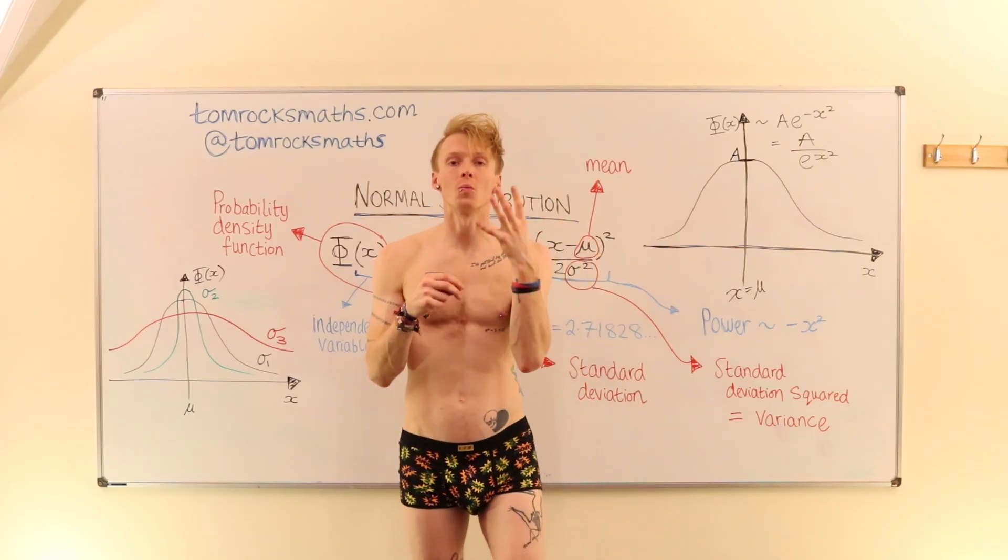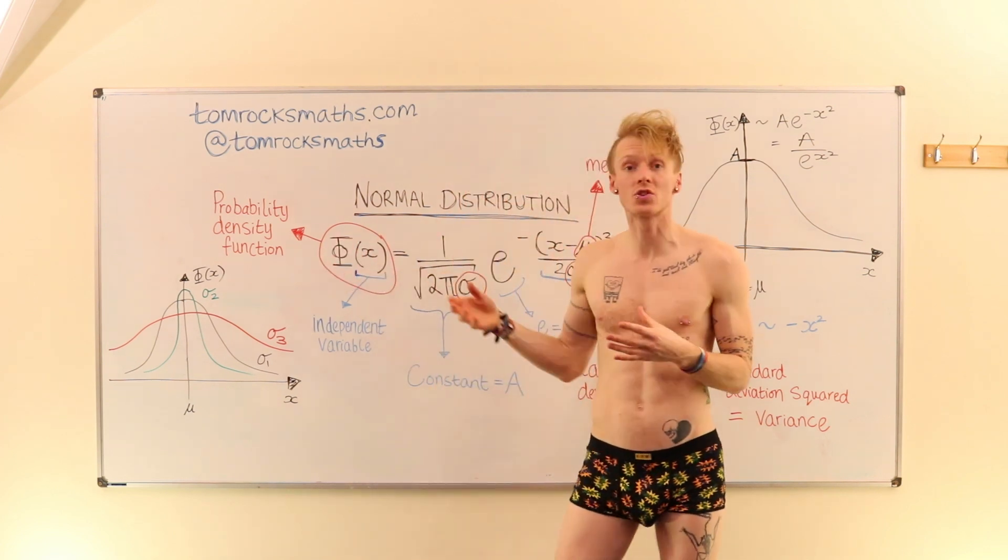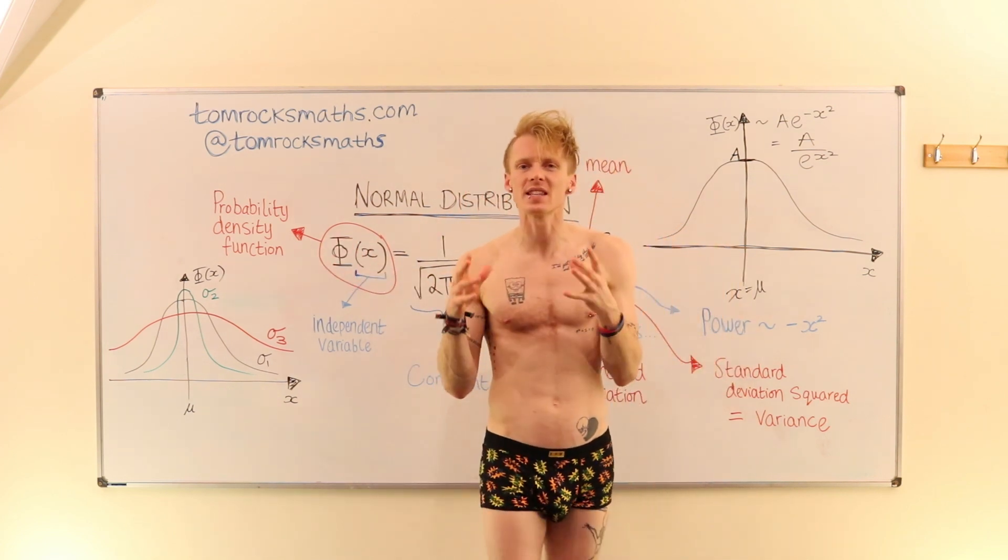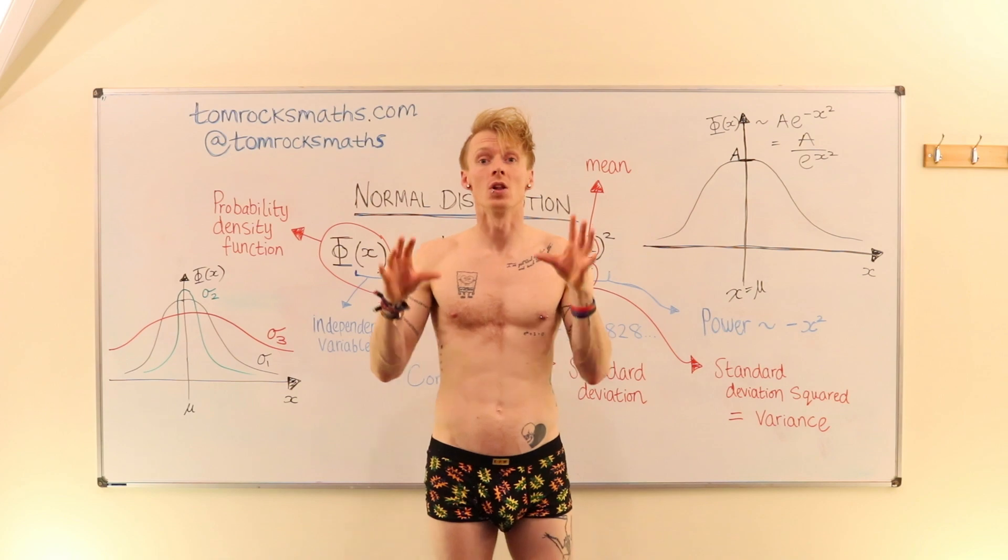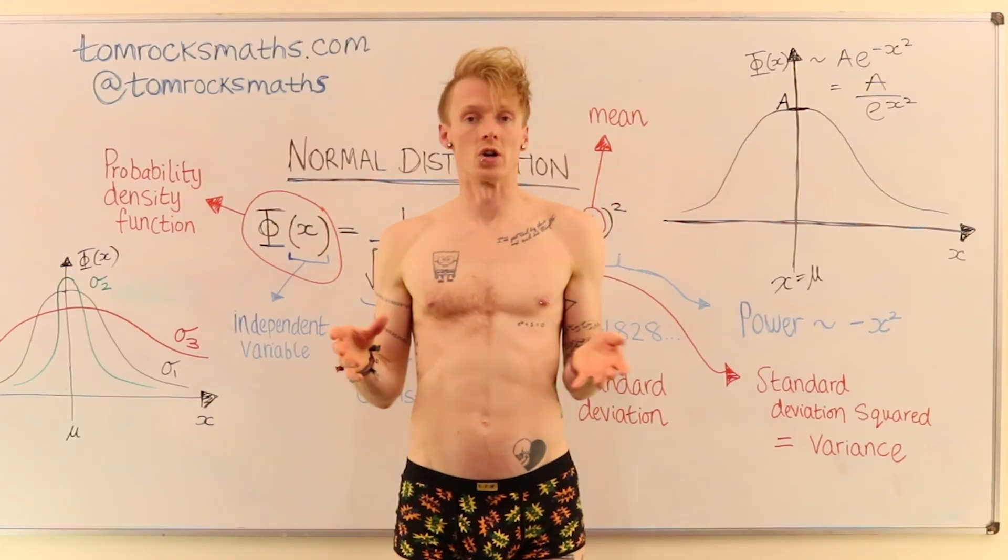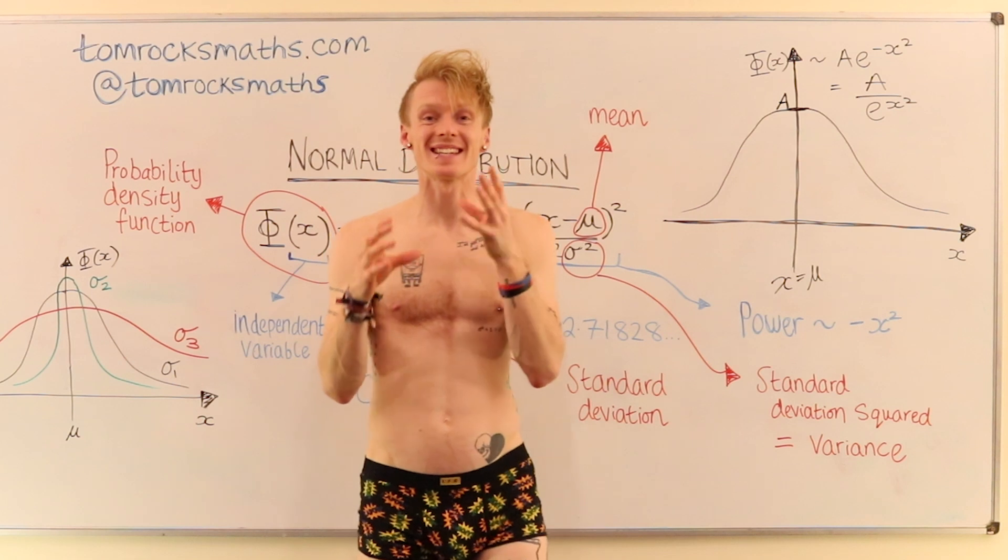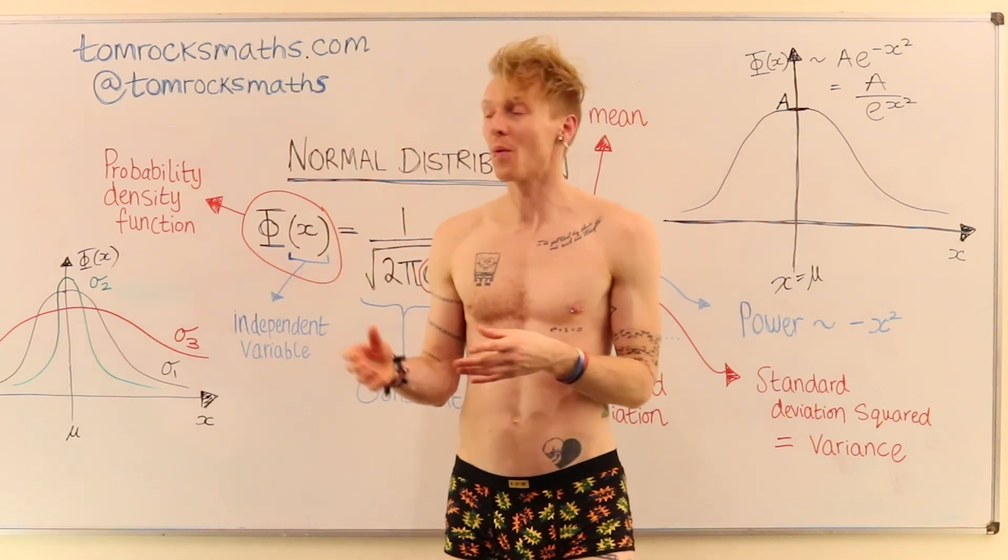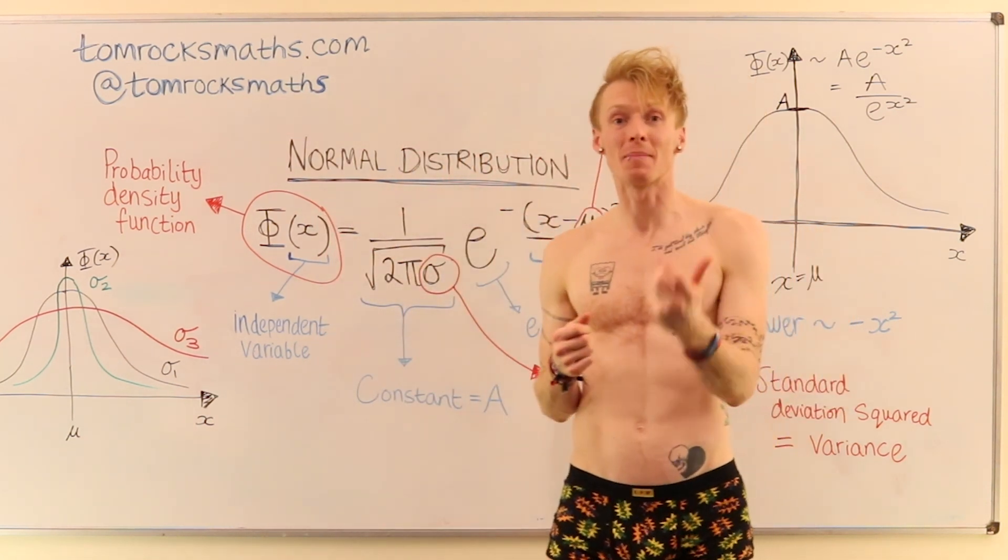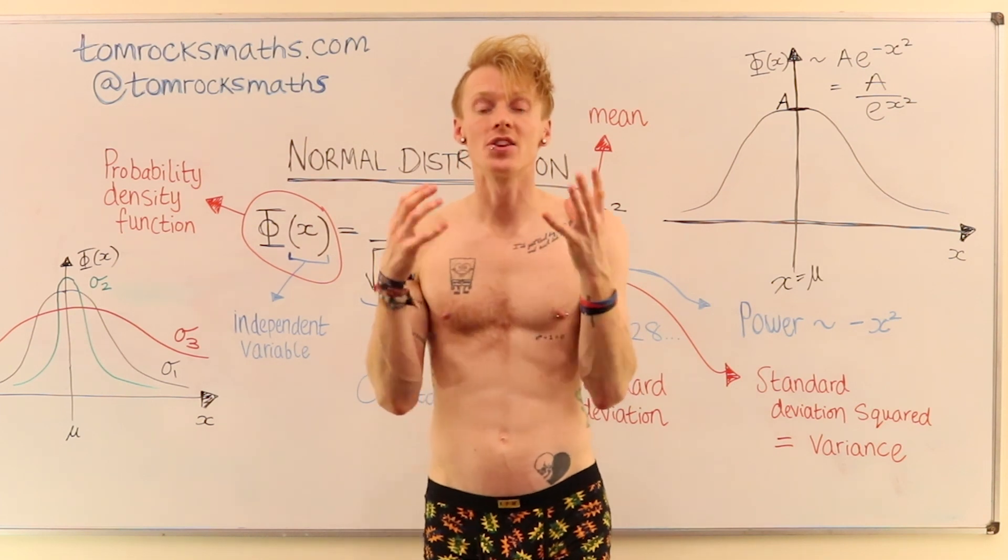Another really important way in which the normal distribution is used is in testing the significance of experimental results. Suppose you are trialing a new drug. So this is a good example because this is exactly the kind of thing where the normal distribution and hypothesis testing are used.